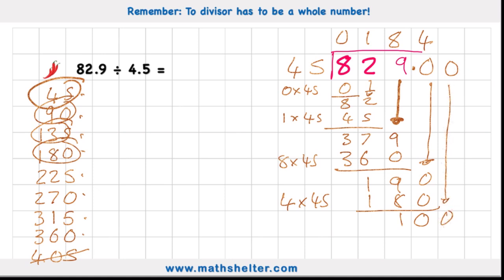How many 45s are there in 100? Well, there's 2. 2 times 45 is 90. That leaves me with 10. And look what's going to happen again here. I'm going to get into that repetitive pattern of having 100 and subtracting 90. So I know that I'm going to have 2s repetitively. So my answer, don't forget to put the decimal point back in the right place. And my answer therefore is 18.422 recurring.